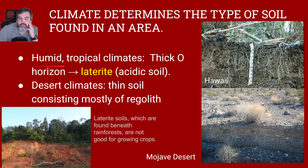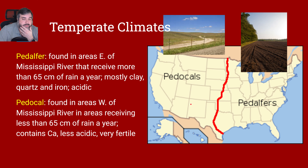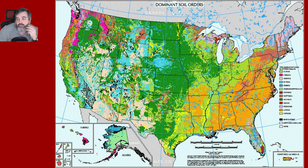Climate determines many different soil types. Humid tropical climates have a very thick O horizon called laterite, which is found beneath rainforests and is actually not that good for growing crops. Desert climates, like the Mojave Desert shown here, have mostly just regolith on the surface. In temperate climates like ours, there's pedalfer — pretty much the eastern United States east of the Mississippi — which receives more than 65 centimeters of rain, is mostly clay, quartz, and iron, and tends to be slightly acidic. West of the Mississippi you have pedocals, which contain calcium, are less acidic, and are very fertile — this is the breadbasket of America, the Midwest.